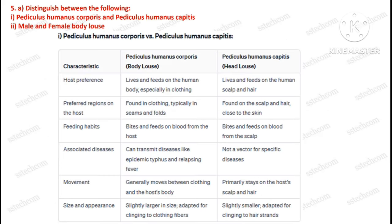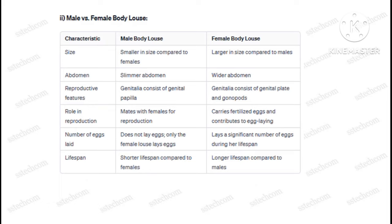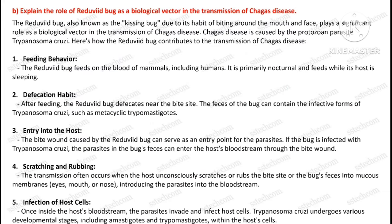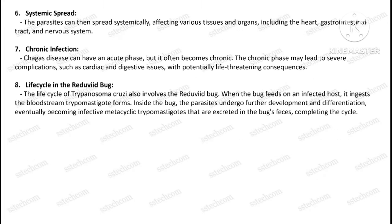Question number 5: distinguish between the following, including aspects of Chagas disease.